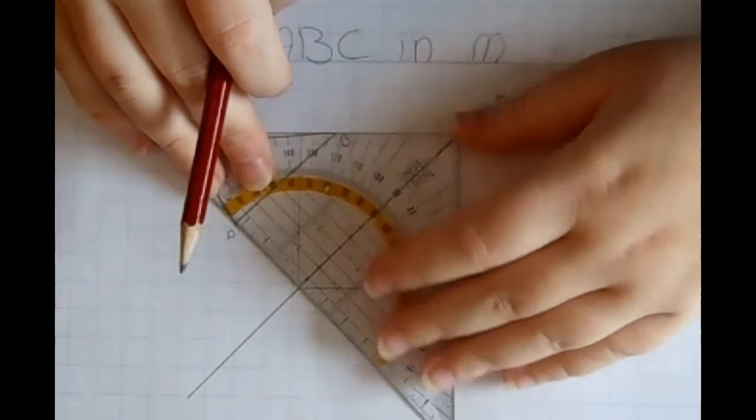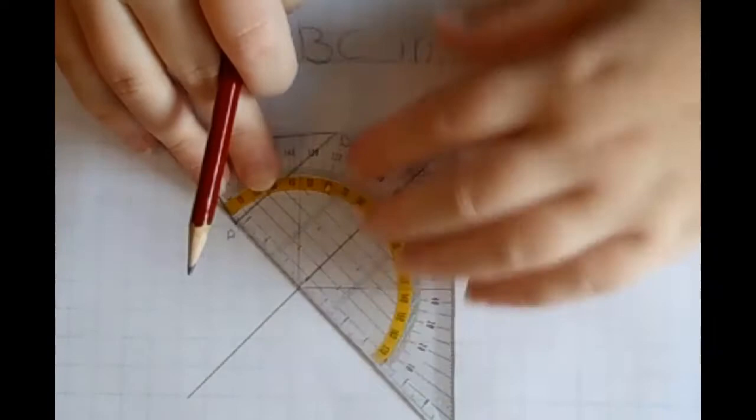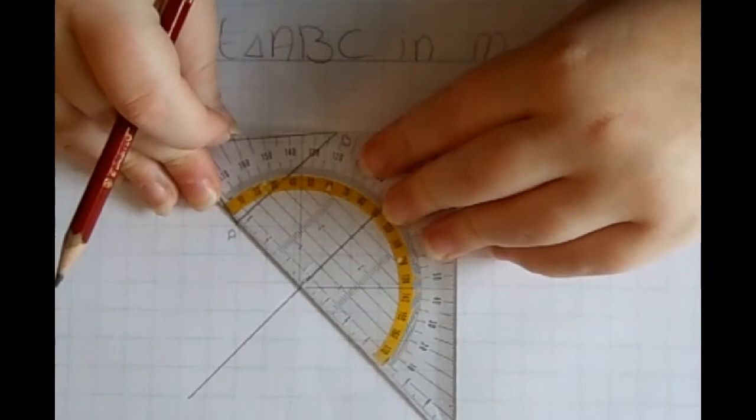Then I am going to push my protractor triangle so I am touching point A with my ruler line. So this is a perpendicular line right now.